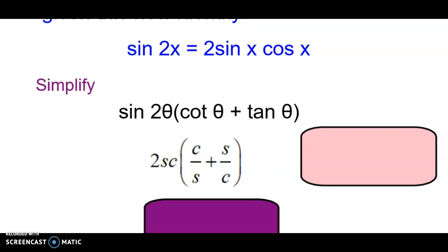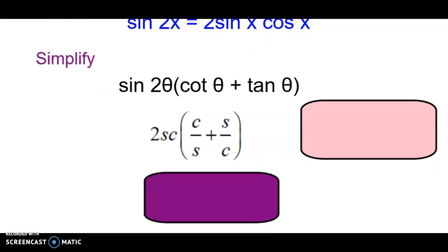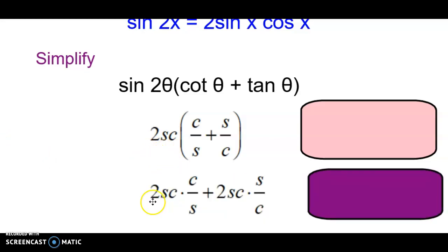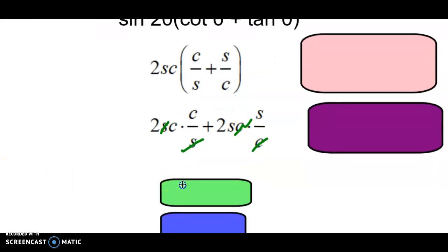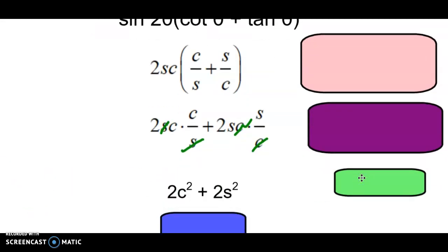Using just the first letter of each trig word, we do some algebra. We take the 2sc and distribute it. In the first term, 2sc times c over s — the sines cancel, giving us 2c squared. In the second term, the cosines cancel, giving us 2s squared.